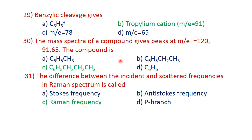The mass spectrum of the compound shows peaks at M/E 120, 91, and 65. The compound is C₆H₅CH₂CH₂CH₃, or 1-phenylpropane, which is the correct answer.